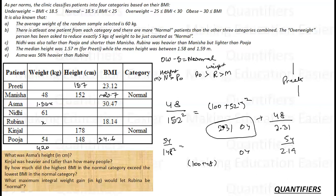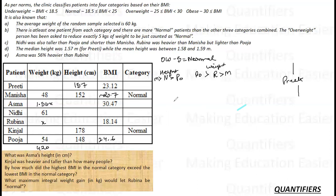We can also find the data for Preeti because we know the height now. So weight upon 157 square equals 23.12. From here your weight comes out to be somewhere around 57.